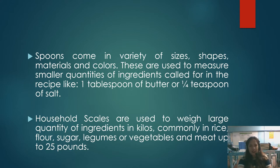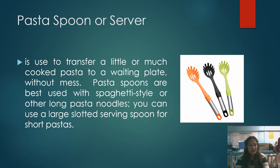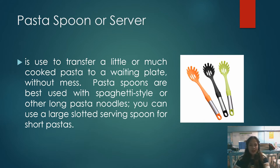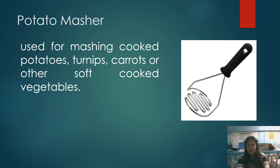The pasta spoon or server is used to transfer cooked pasta to a waiting plate without mess. It is best used with spaghetti-style or other long pasta noodles; a large slotted serving spoon can be used for short pastas. Next, the potato masher is used for mashing cooked potatoes, turnips, carrots, or other soft cooked vegetables — first boil the vegetables, then use the potato masher to mash them.